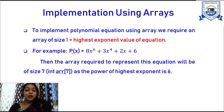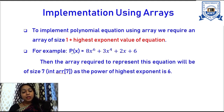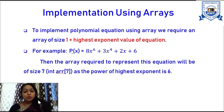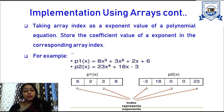To implement the polynomial equation using an array, we need to know the size of the array prior. The size of the array for storing a polynomial equation will be 1 plus the highest exponent value of the equation. For example, the polynomial equation 8x power 6 plus 3x power 4 plus 2x plus 6 has the highest exponent value of 6, so the required array size is 6 plus 1, that is 7.